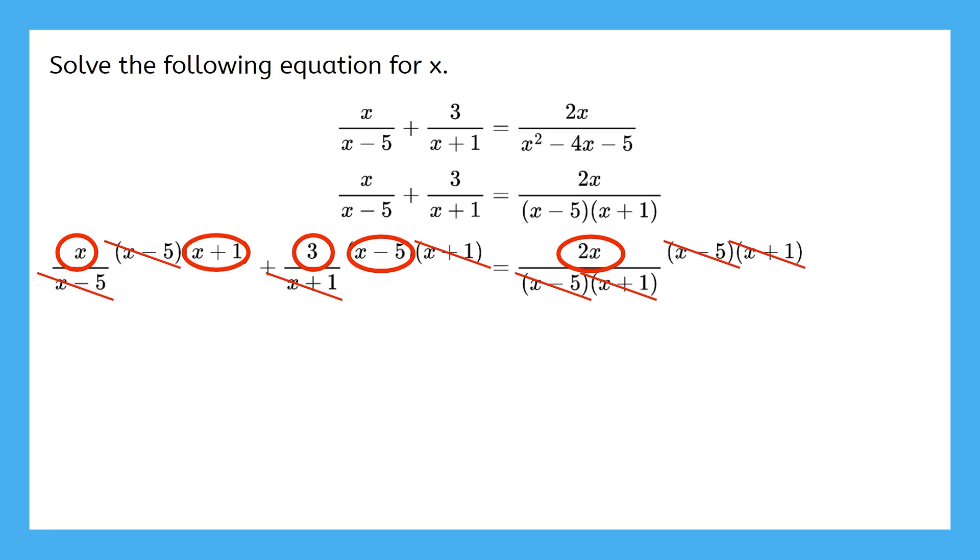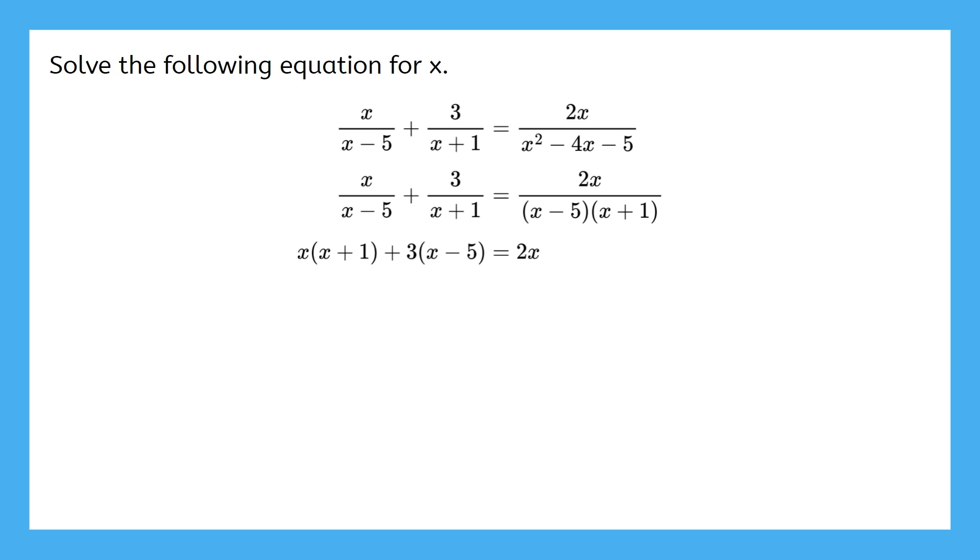Now we get to write this with only what's left. And it looks so much better this way. Let's keep going. It looks like we need to distribute here to get rid of these parentheses. Then we can start combining like terms. It looks like we're stuck with an x squared term here this time. It didn't cancel like in the previous problem, but that's okay. Let's get this equal to zero so we can factor it.